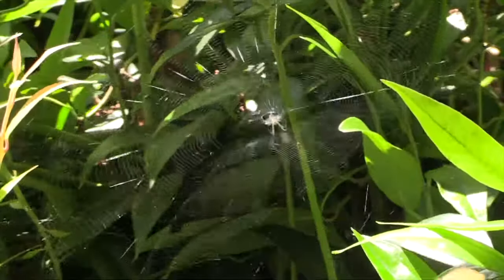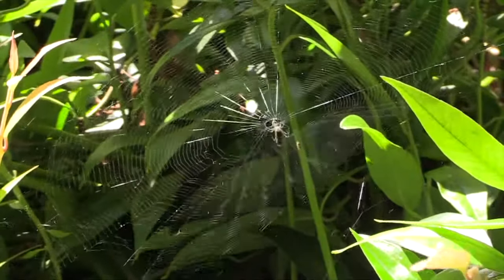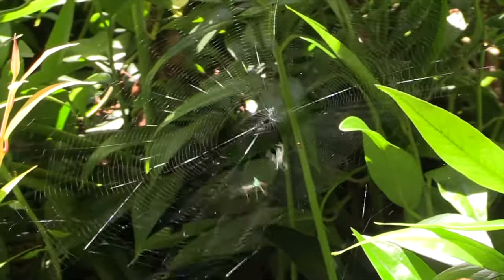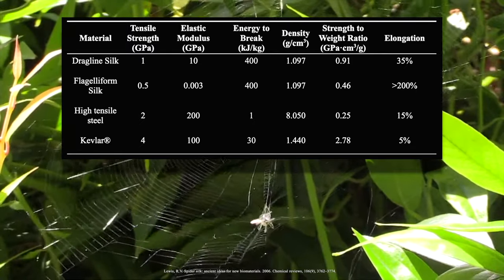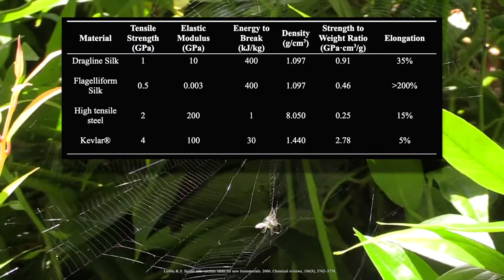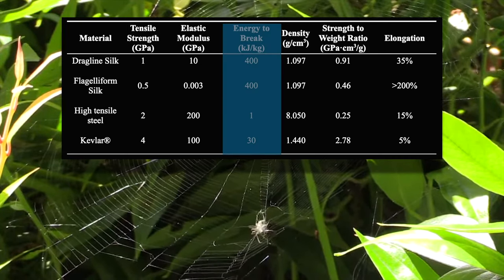Due to the main function of the web, which is ensnaring prey, the web must be able to absorb all the energy of a flying insect without breaking. From the material properties you see here, it is clear spider silk has evolved to be incredibly tough for this purpose, making it one of the toughest materials known to man, several magnitudes more so than kevlar or steel.